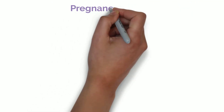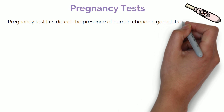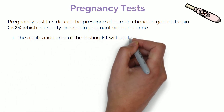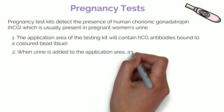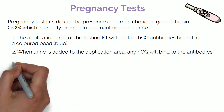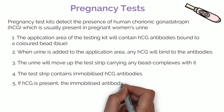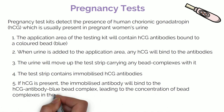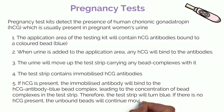Monoclonal antibodies can also be used in pregnancy testing kits. These kits detect the presence of human chorionic gonadotropin protein, or HCG, which is usually present in pregnant women's urine. The application area of the testing kit will contain HCG antibodies bound to a coloured bead, which is usually blue. When urine is added to the application area, any HCG will bind to the antibodies. The urine will move up the test strip, carrying any bead complexes with it. The test strip contains immobilised HCG antibodies. If HCG is present, the immobilised antibody will bind to the HCG antibody-blue bead complex, leading to concentration of the bead complexes in the test strip, and therefore the test strip will turn blue. If there is no HCG present, the unbound beads will continue moving up the stick and no colour will be observed.